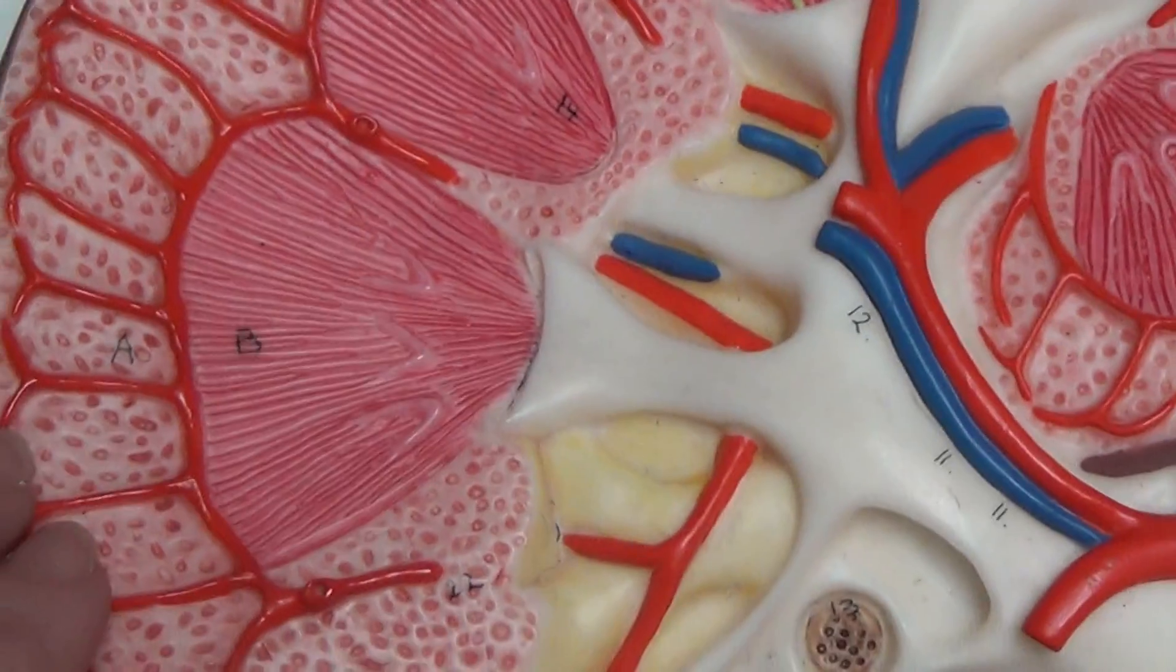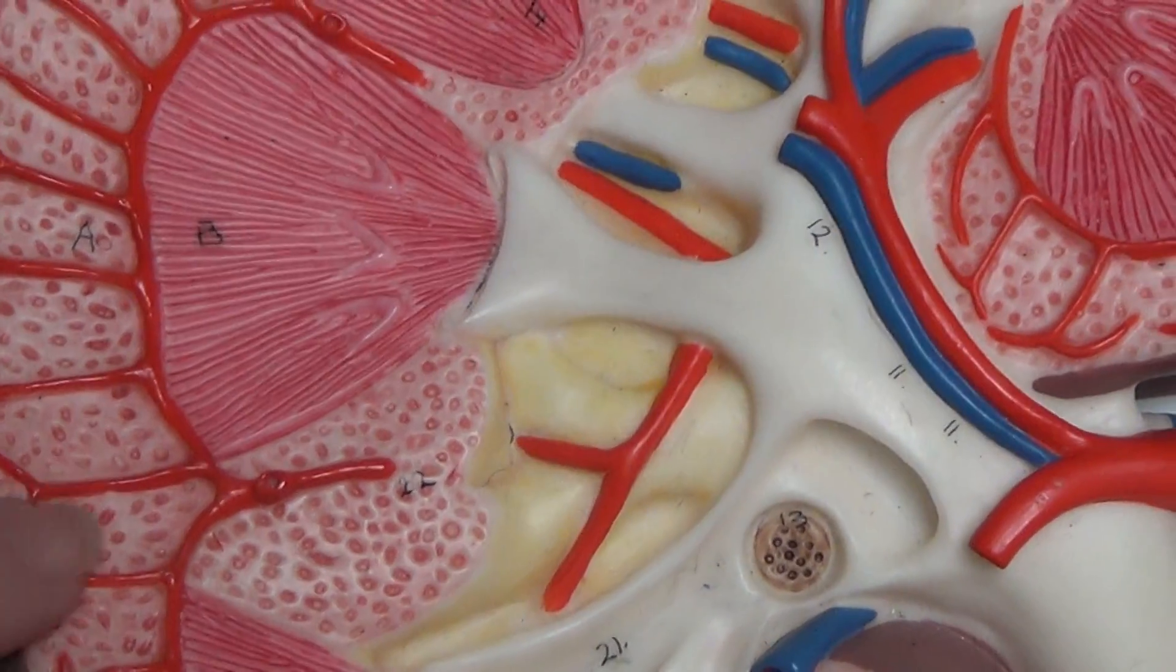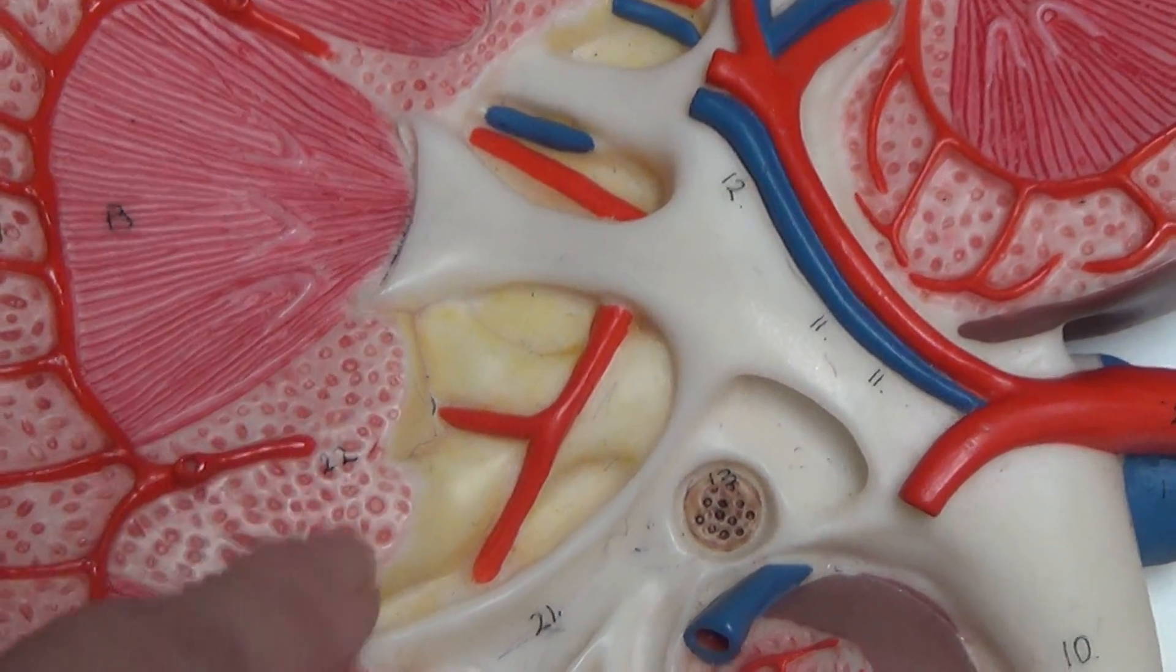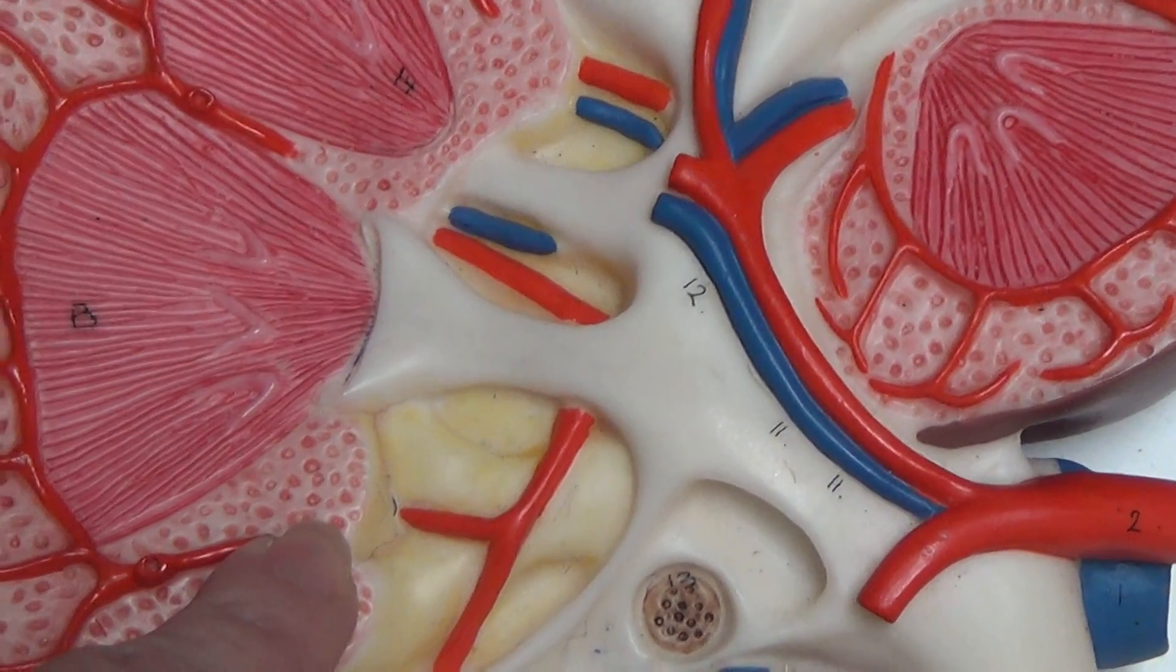It's got blood vessels running throughout it and part of the cortex runs up between the pyramids. So you see this dotted appearance extends in here. This is also part of the renal column.